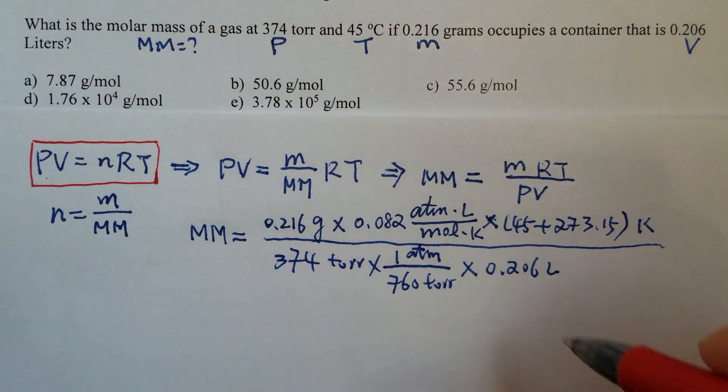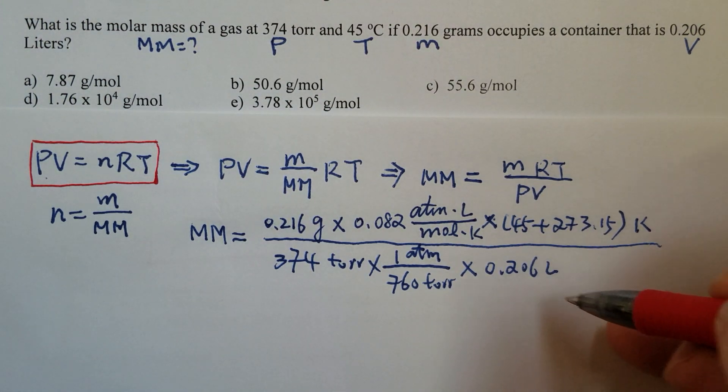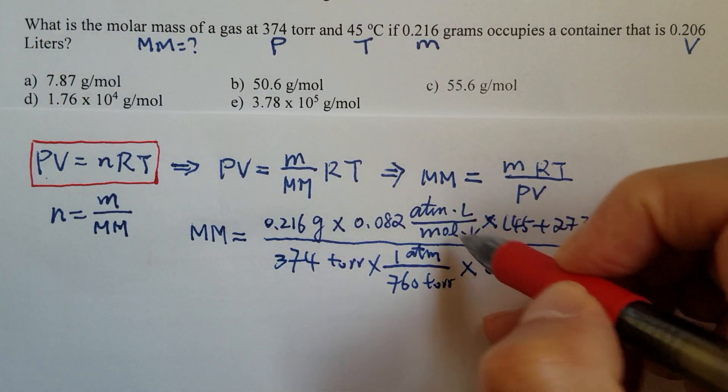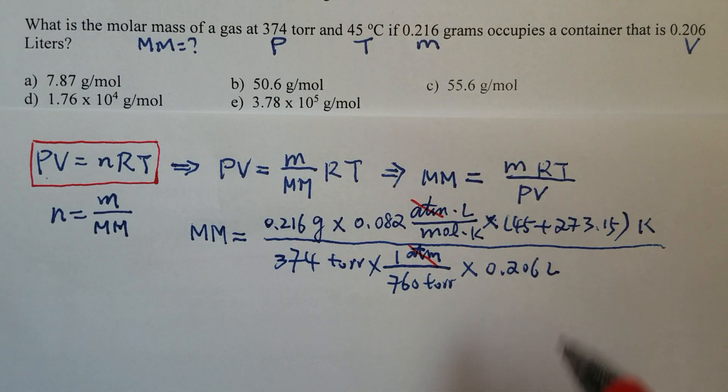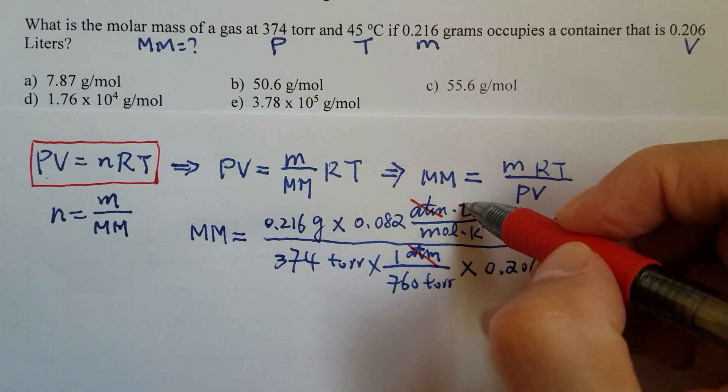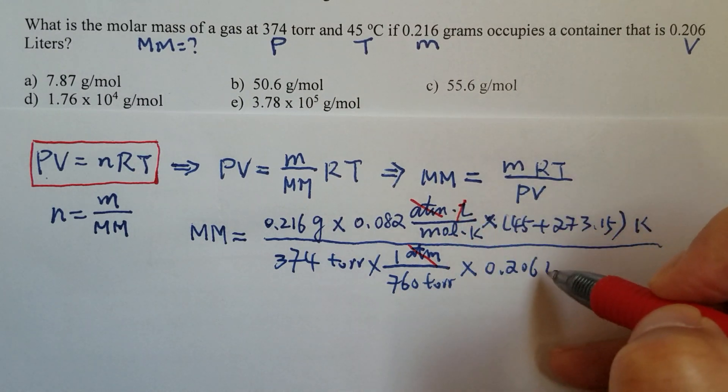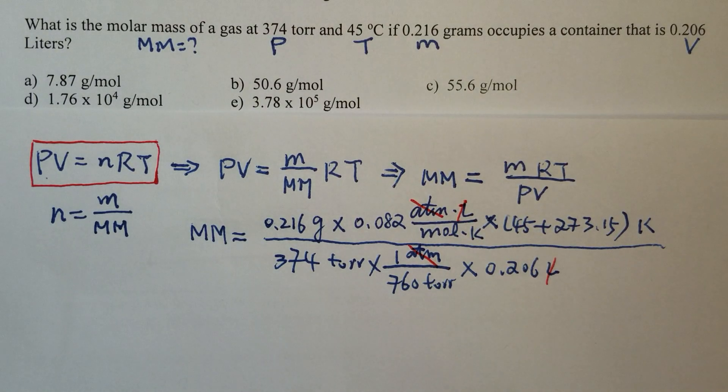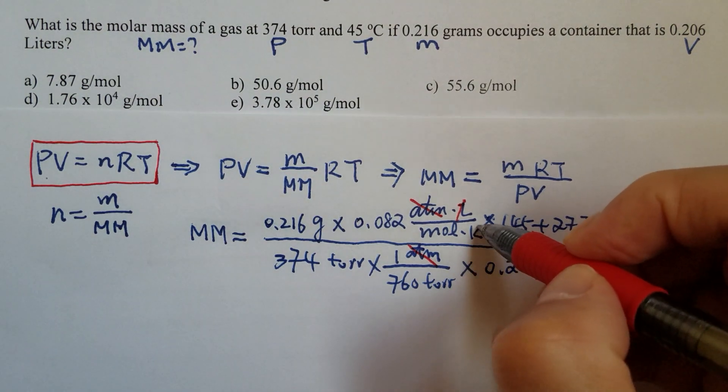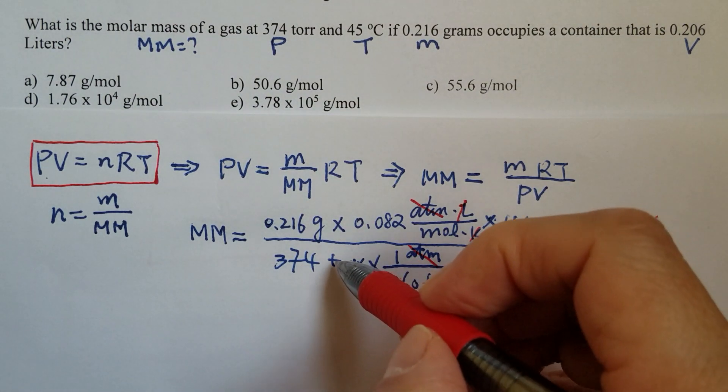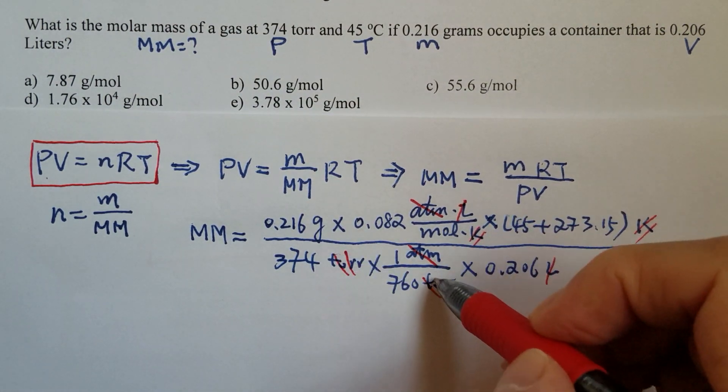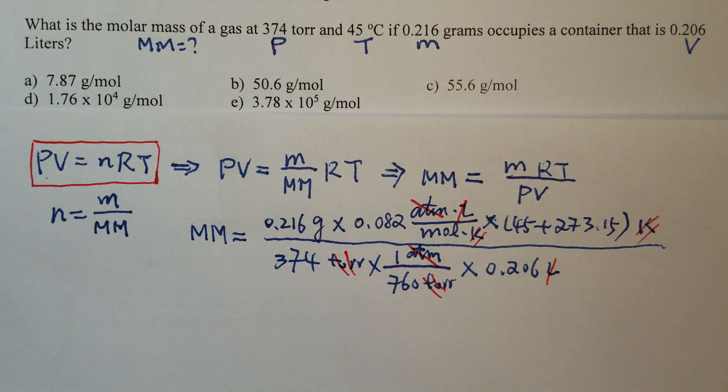Now let's take care of the units. We have atmosphere, atmosphere, canceled. Liters, liters, canceled. Kelvin, Kelvin, canceled. Torr, torr, canceled.